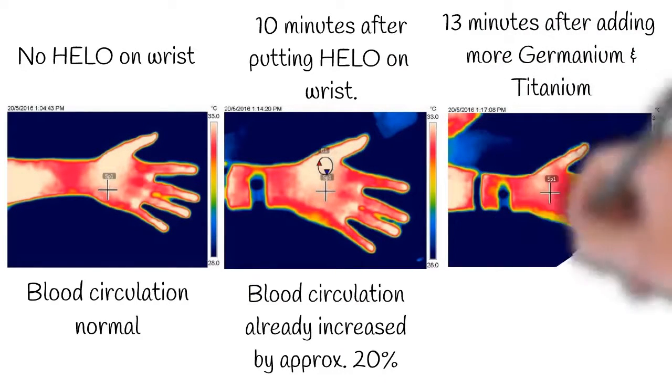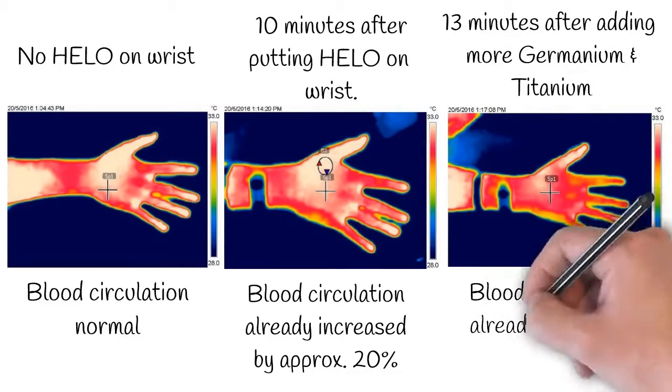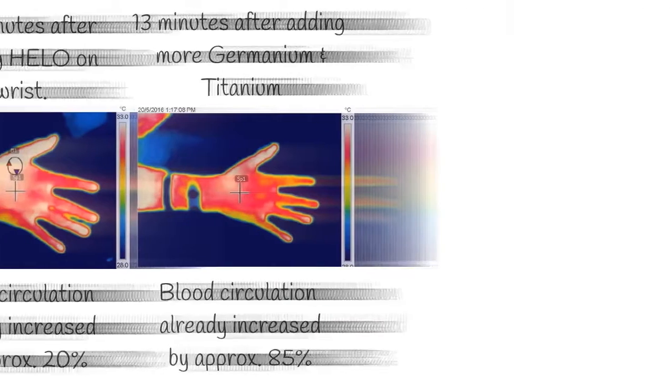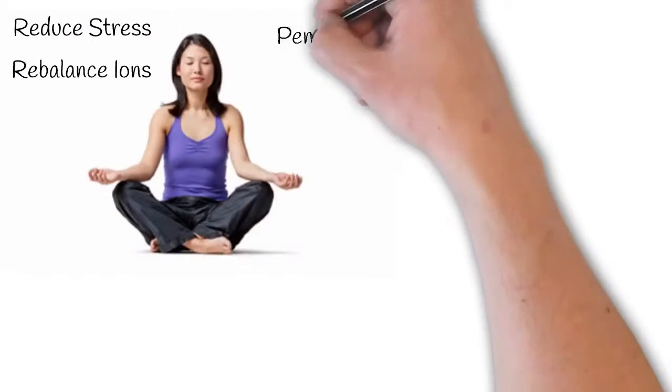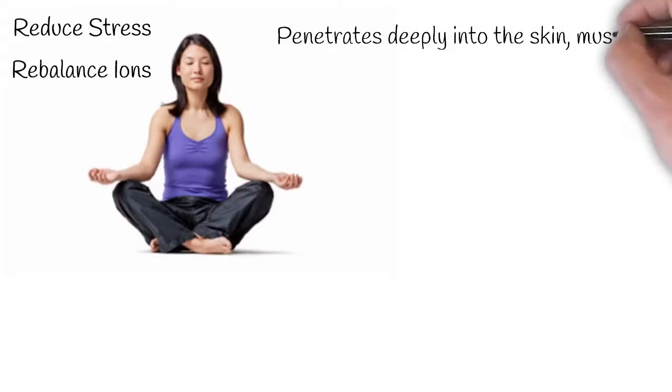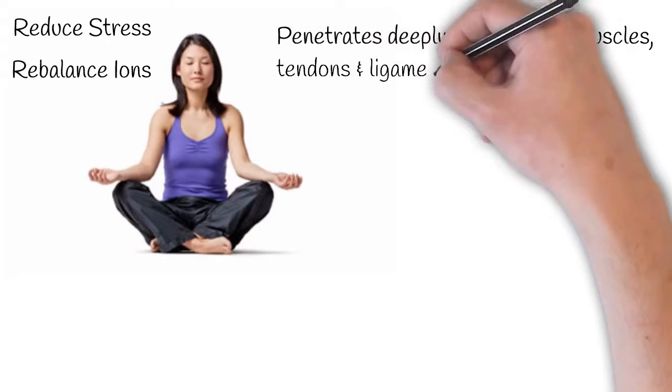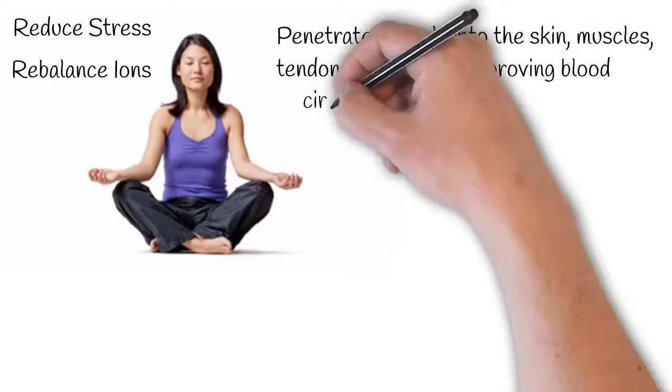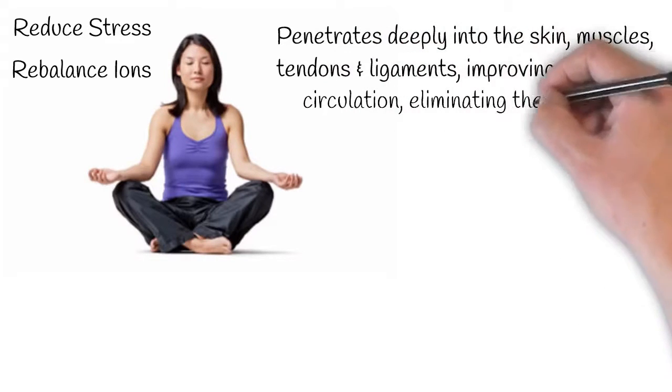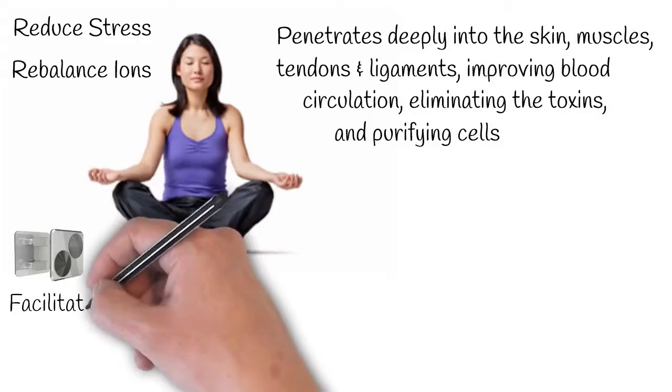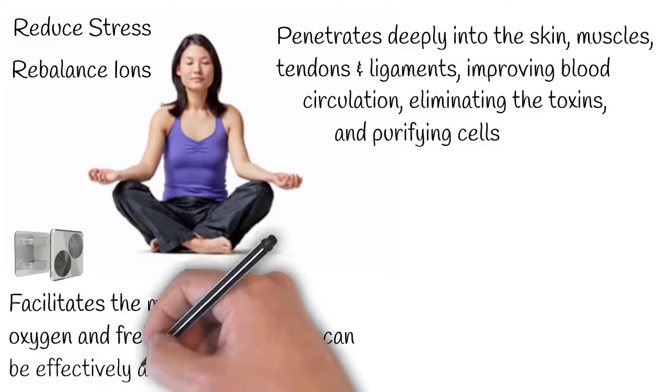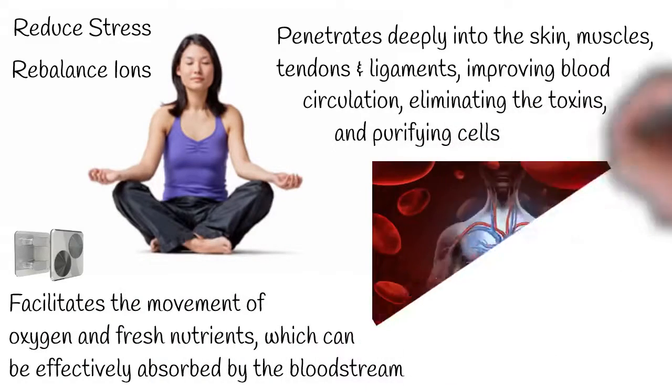The effect of germanium on the body is a reduction in stress and rebalancing the ions by penetrating deeply into the skin, muscles, tendons, and ligaments. Germanium improves blood circulation, eliminating the toxins and purifying the cells. Germanium facilitates the movement of oxygen and fresh nutrients which can be effectively absorbed by the bloodstream.